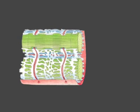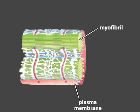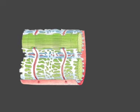Muscle cells have an elaborate architecture that allows them to distribute calcium ions quickly throughout the cytosol. Deep tubular invaginations of the plasma membrane, called T-tubules, crisscross the cell.